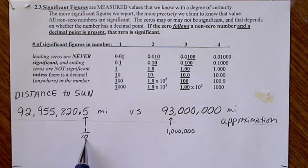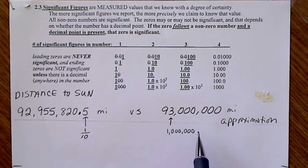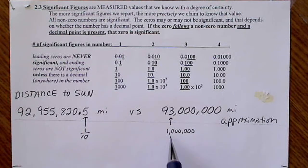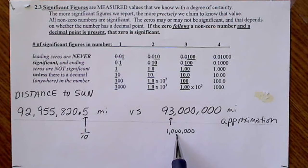We know this with certainty down to the one-tenths place. This one we're only providing an estimation, and so the error in this number is in the one-millions place.